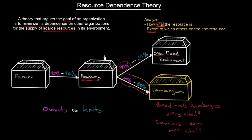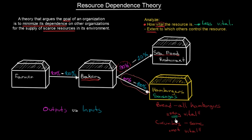Now that we've analyzed that bread is very vital and that others control it significantly, we should try to do something about it. We can work on the first point so that the resource becomes less vital for us. For example, we will not only produce hamburgers but also some sort of sausages, where the vital resource would be meat instead. If we produce both sausages and hamburgers and suddenly run out of bread, we are not in that big trouble — the bread will be less vital after this change.